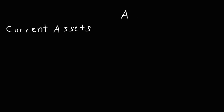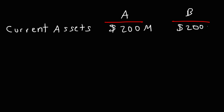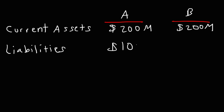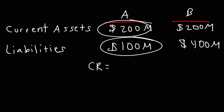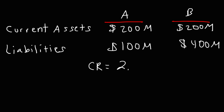Let's look at an example to illustrate that. We're going to compare two companies: company A and company B. Company A has $200 million in current assets, and the same is true for company B. Company A has $100 million in current liabilities, and company B has $400 million in current liabilities. So the current ratio for company A is current assets divided by current liabilities: $200 divided by $100, which is 2.0. For company B, it's $200 million divided by $400 million, so the current ratio is 0.5.